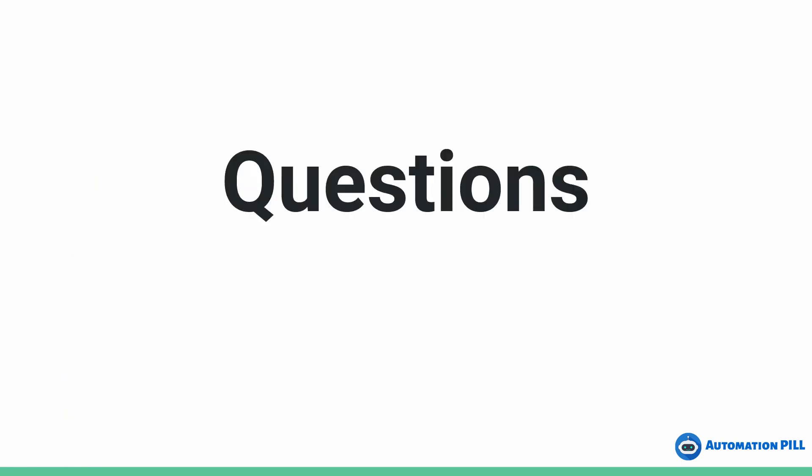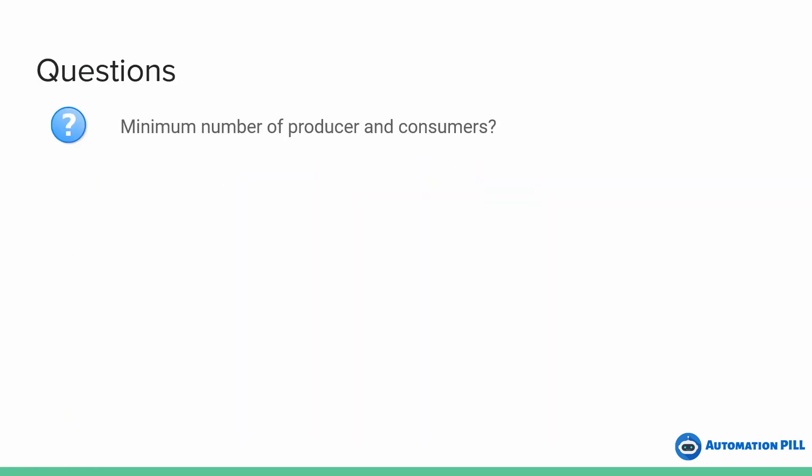Let's answer some questions I've heard from RPA developers. Do we need a minimum number of producers and consumers? Definitely no, but it is recommended to have at least two for scalability. Otherwise it doesn't make sense to implement such a thing.